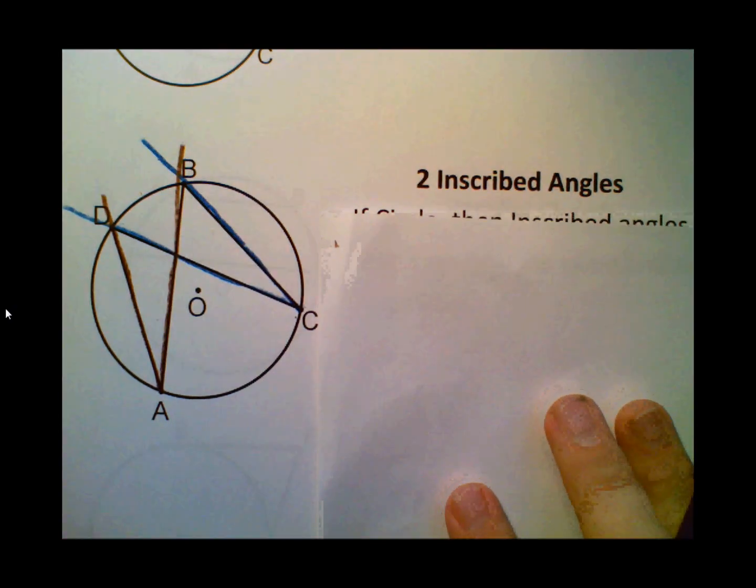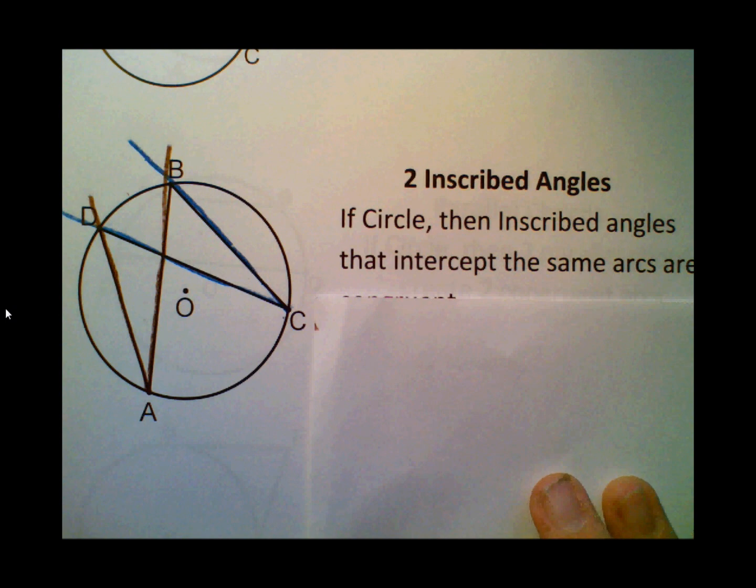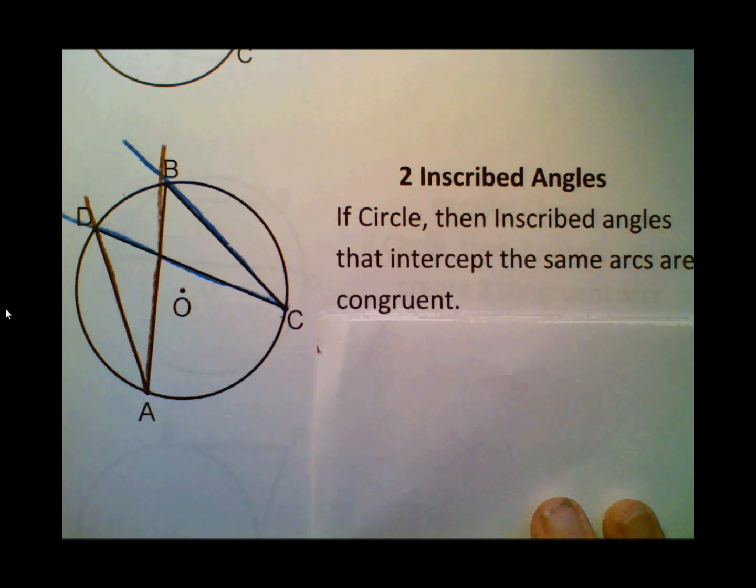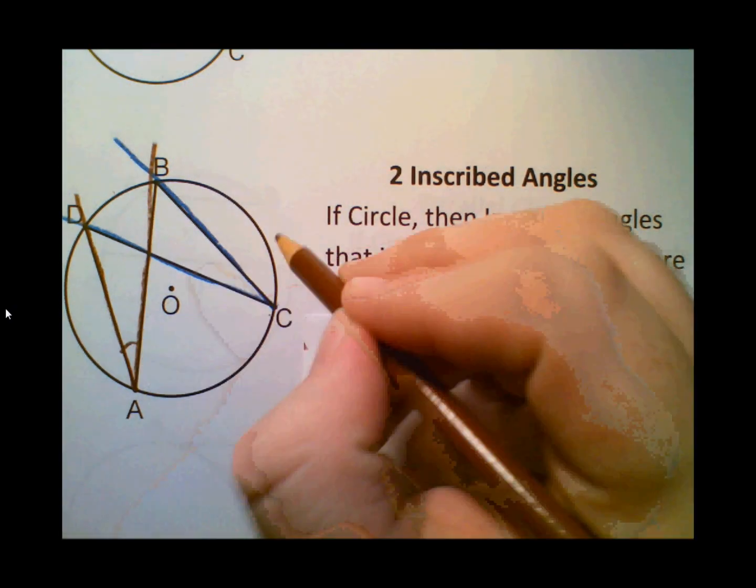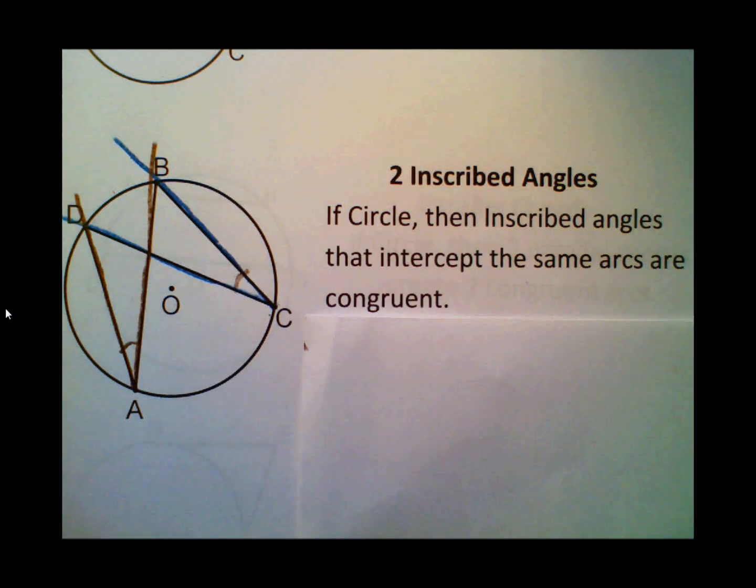So what we can say is that if the circle, then inscribed angles that intercept the same arc are congruent. Using this reason, we can say that angle A and angle C are congruent to each other.